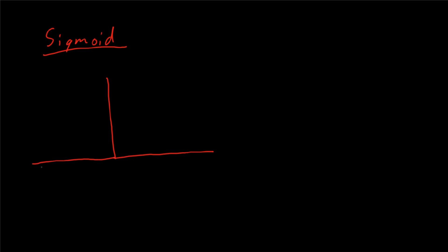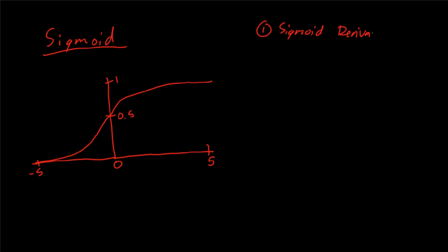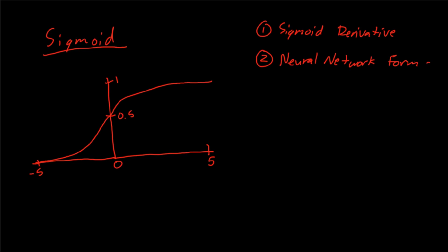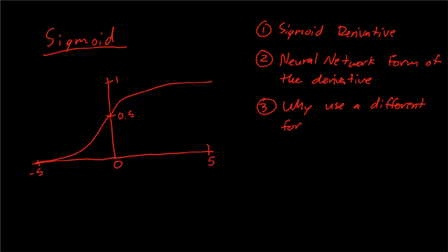Hey YouTube, it's Dimitri. Today we're going to cover the sigmoidal function, which is commonly used in neural networks as an activation function between layers and also for the output layer. We're going to cover three separate parts: the derivative of the sigmoid function, the conversion of that derivative into the form commonly seen in neural networks and machine learning, and why we need that second form. Each part will be in a different color ink so you can jump to different sections, and I'll put links in the description below.